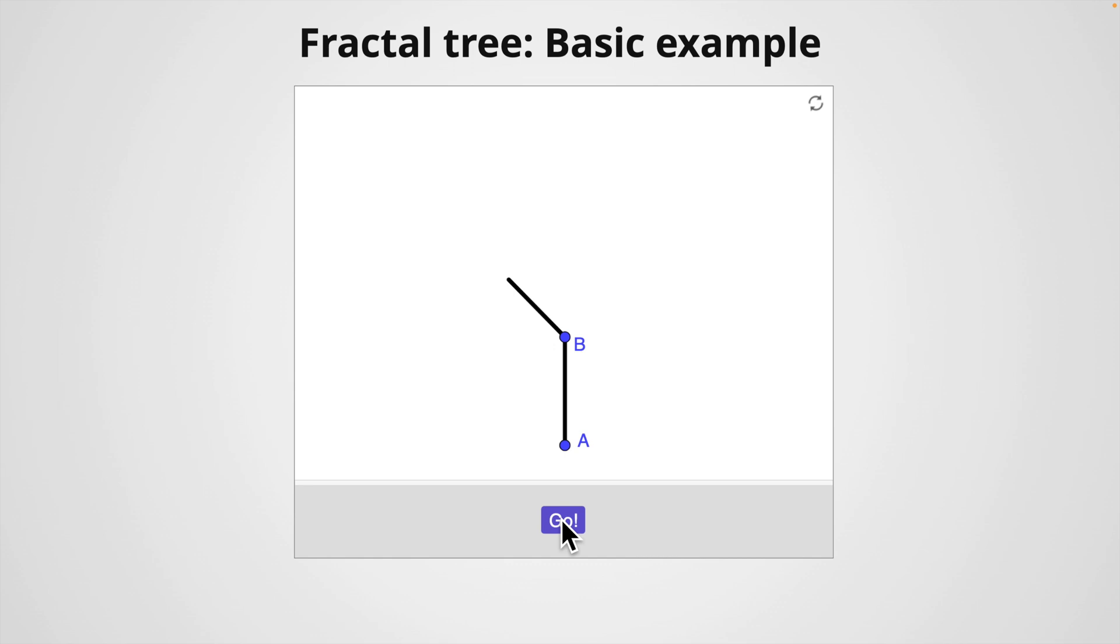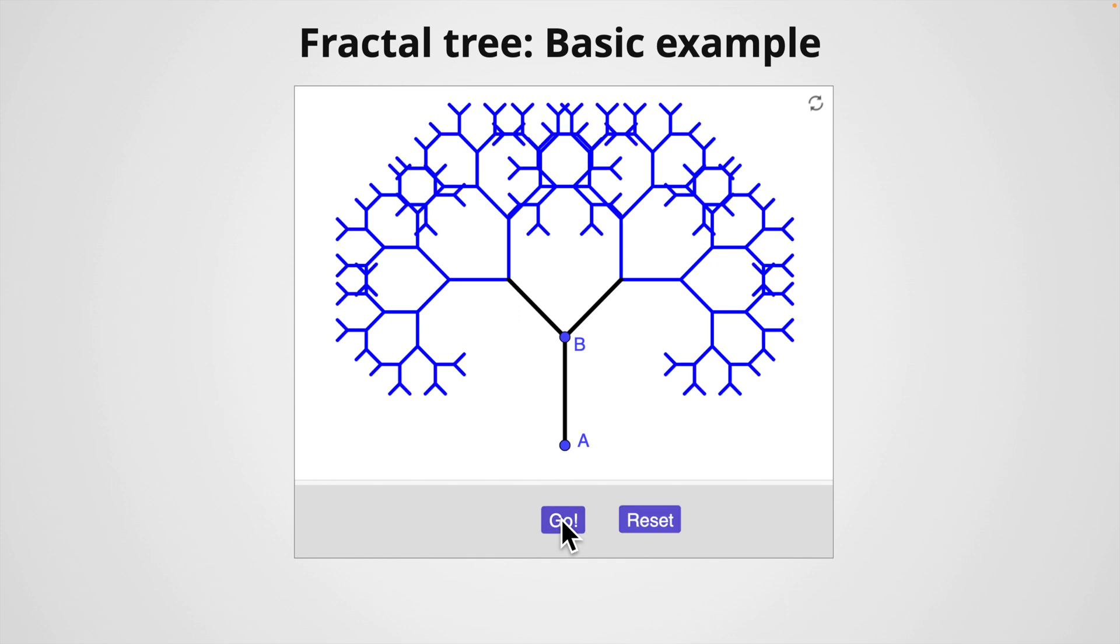The second branch is then created in a similar way, but rotating the original segment with a different angle. Now I used 3π/4, so it looks symmetrical, and we use the same shrinking factor 0.75. Then we repeat the same process for each one of the branches to obtain four new branches, and so on. And we can continue as many times as we wish, but we're going to stop in this one.